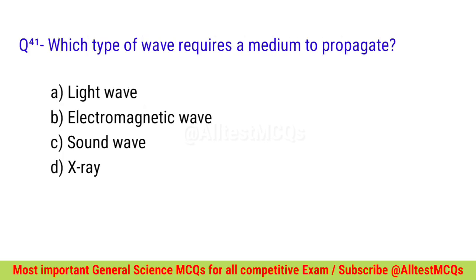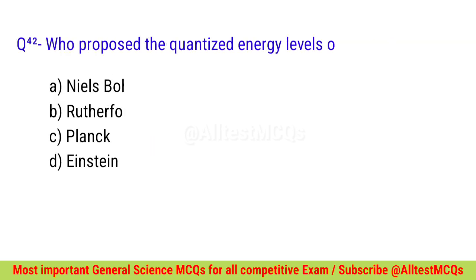Question number forty-one: Which type of wave requires a medium to propagate? Correct option is C — Sound wave. Question number forty-two: Who proposed the quantized energy levels of atoms? Correct option is A — Niels Bohr.